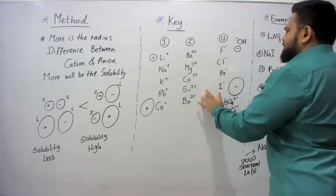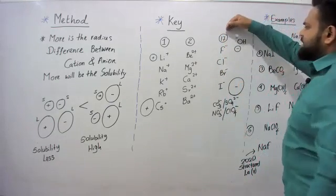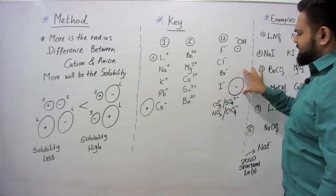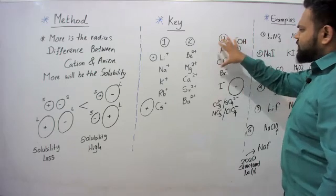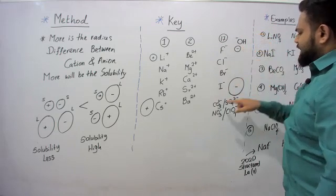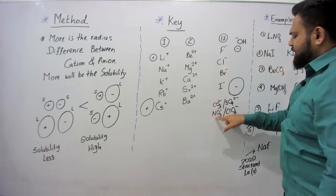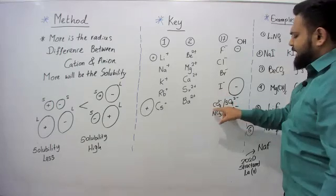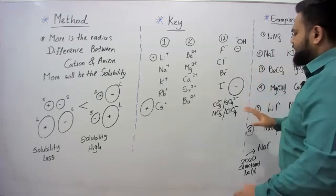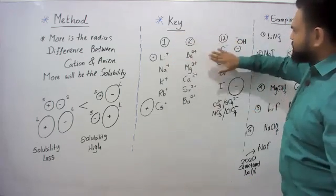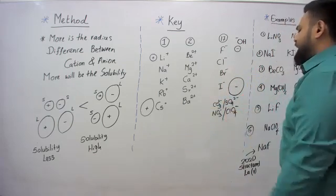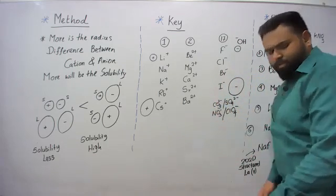For Group 17, F⁻ is the smallest anion while I⁻ is the largest. Apart from these groups, consider OH⁻ as a small anion, while carbonate, sulfate, nitrate, and chloride — which are larger heteroatomic anions — are classified as large anions. So: OH⁻ is small, and CO₃²⁻, SO₄²⁻, NO₃⁻, and Cl⁻ are large anions. That is the key.